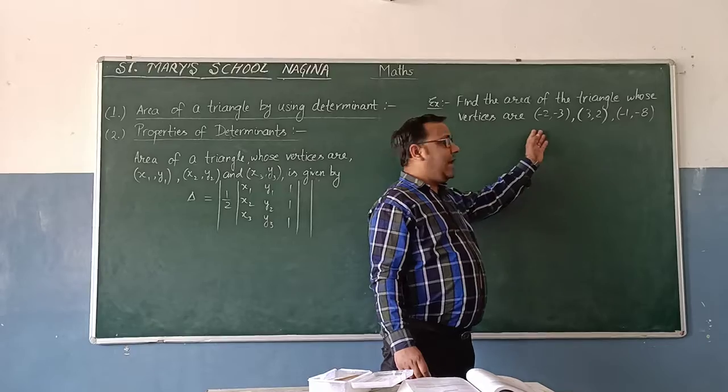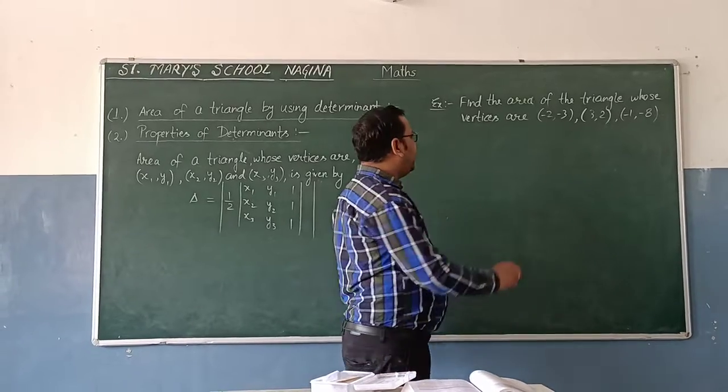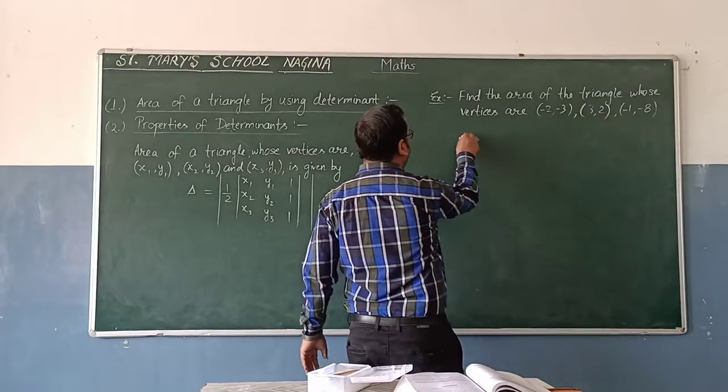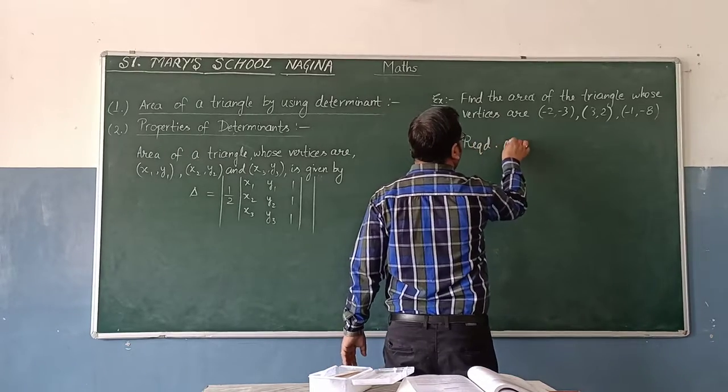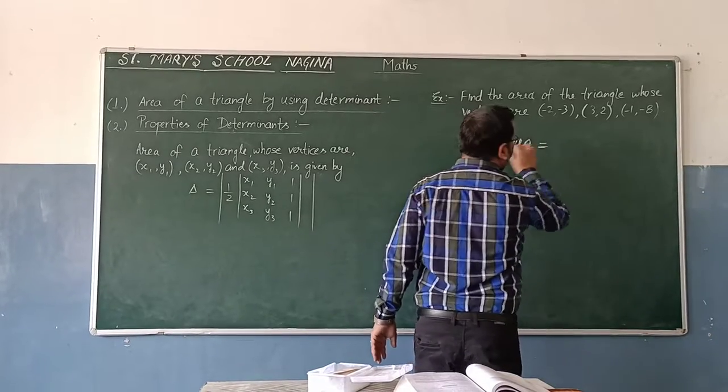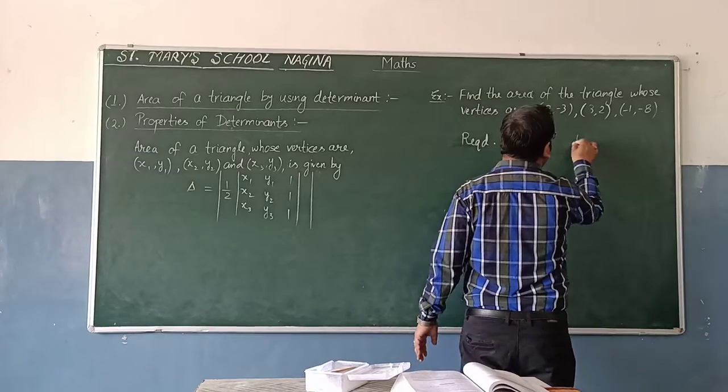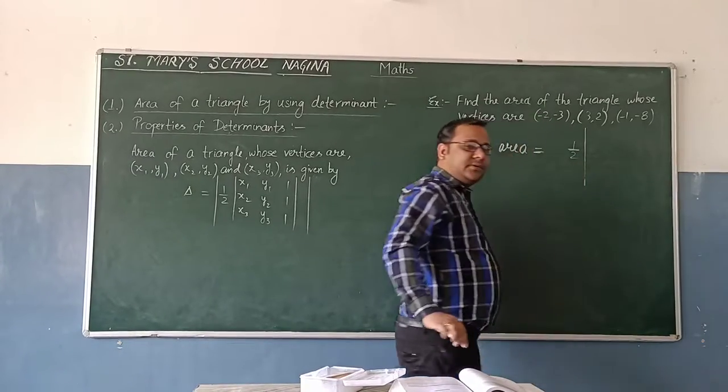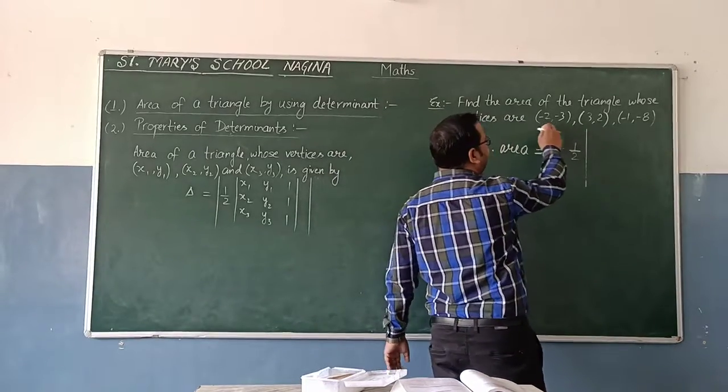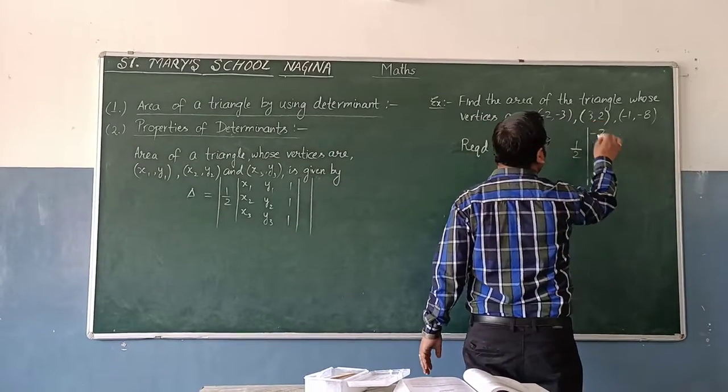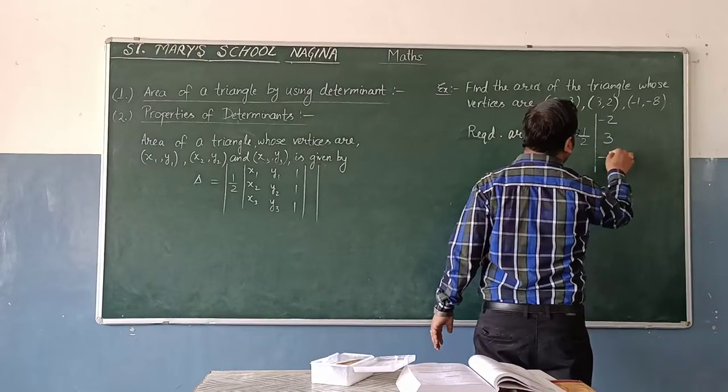So, with the help of these three vertices, we can find the area, therefore required area equals 1 upon 2. Make a determinant first. So, first coordinate of all the vertices, we take minus 1, 3, minus 1.